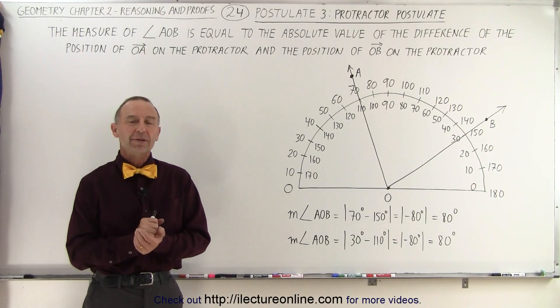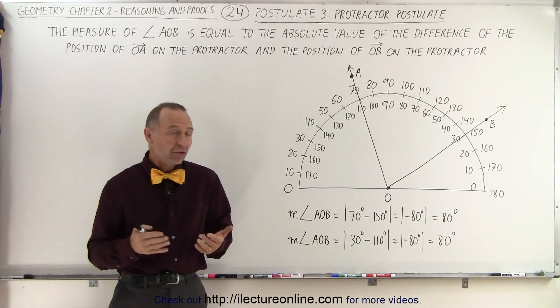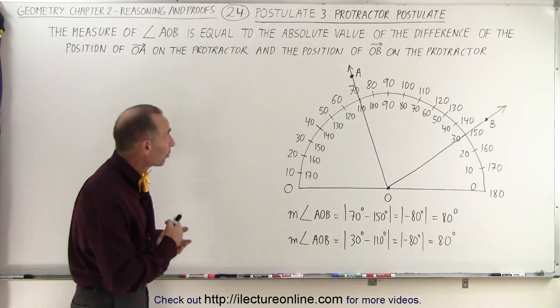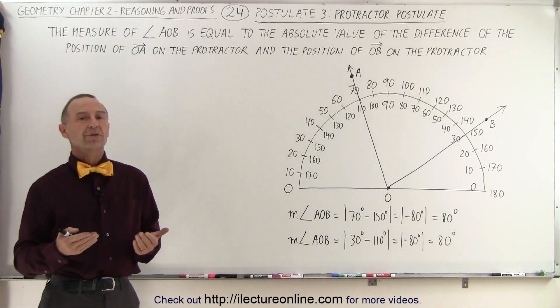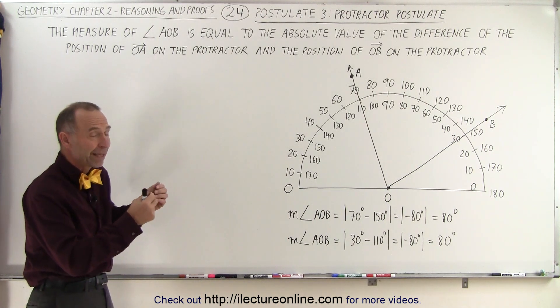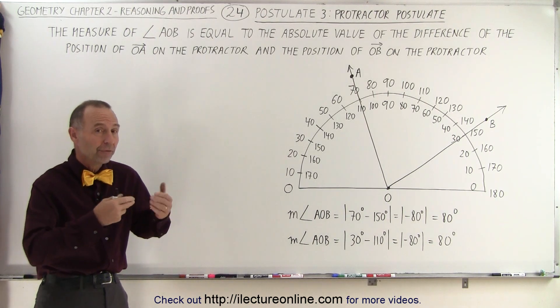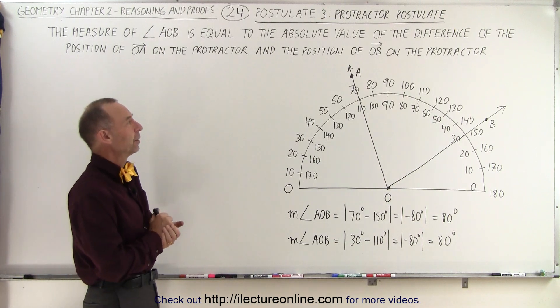Welcome to ElectronLine. The next postulate, postulate number 3, is called the protractor postulate because it involves making measurements of angles using a protractor.